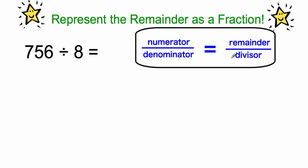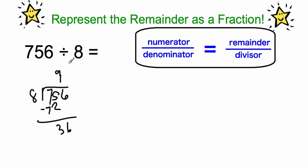The second way you can represent the remainder is as a fraction. Again, we have the same problem: 756 divided by 8. We get 9 times giving 72, subtract out, then 4 times giving 32, subtract out, and we had that remainder of 4. So we have 94 with a remainder of 4. We want to write the remainder as a fraction. The top number in a fraction is called the numerator and the bottom number is the denominator. You can remember this because denominator — think 'down' — it's the bottom number.